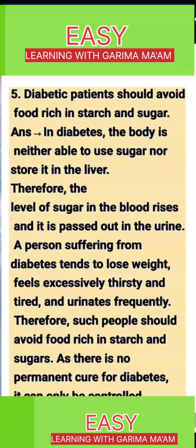5. Diabetic patients should avoid food rich in starch and sugar. In diabetes, the body is neither able to use sugar nor store it in the liver. Therefore, the level of sugar in the blood rises and it is passed out in the urine. A person suffering from diabetes tends to lose weight, feels excessively thirsty and tired, and urinates frequently. Therefore, such people should avoid food rich in starch and sugars, as there is no permanent cure for diabetes — it can only be controlled.